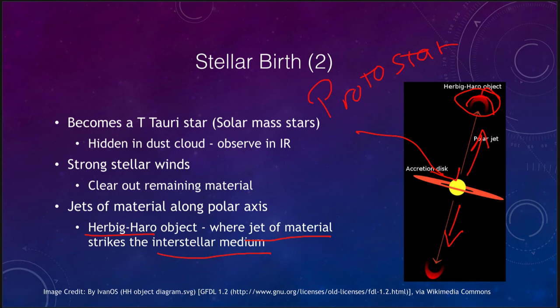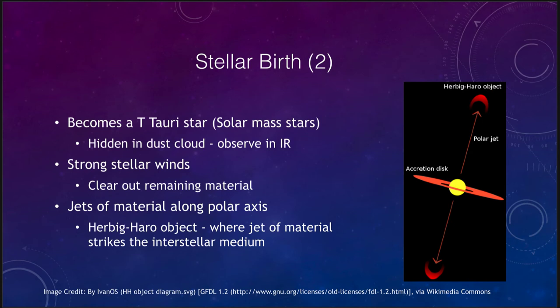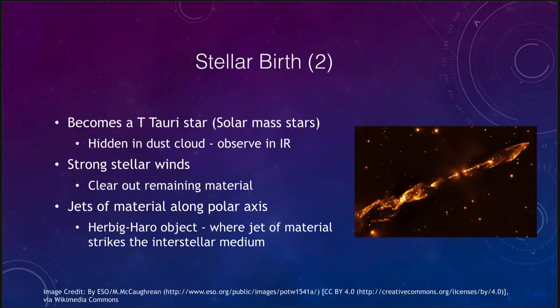Perpendicular to the accretion disk, jets come out and impact material around the protostar — this is the Herbig-Haro object. It is not the protostar itself nor the accretion disk; it is the point where the jets of material strike the interstellar medium, heating it up and causing it to glow. In an actual image of one of these early forming stars, the star is shrouded by dust but the jet can still be seen, and this is especially common for T Tauri stars like our own sun once was.